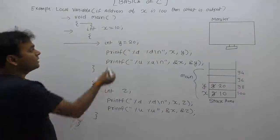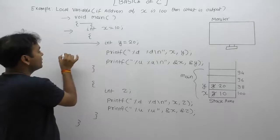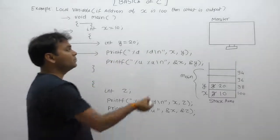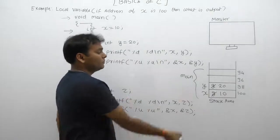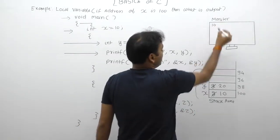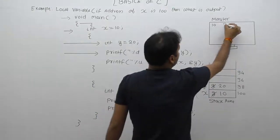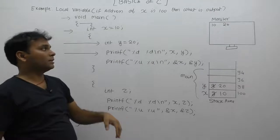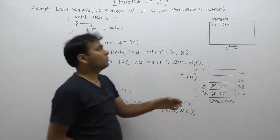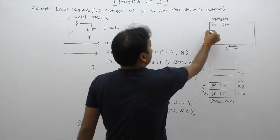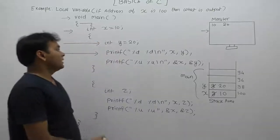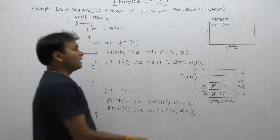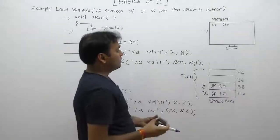After the current statement is executed, control moves to the next statement. According to the next statement, we are displaying the value of x and y. The value of x is 10 and the value of y is 20, therefore the output displayed by the first printf statement is 10 and 20, and control moves to the beginning of the next line.